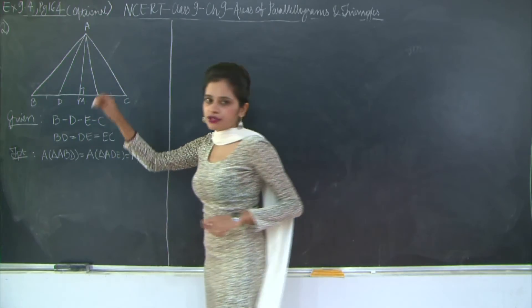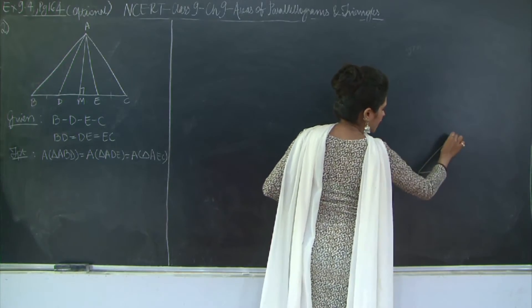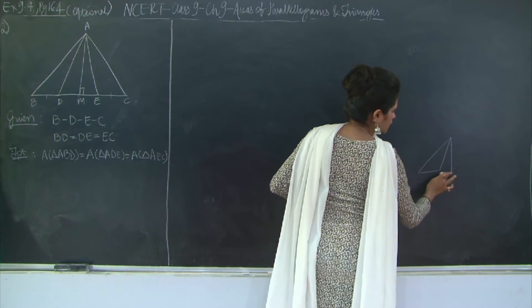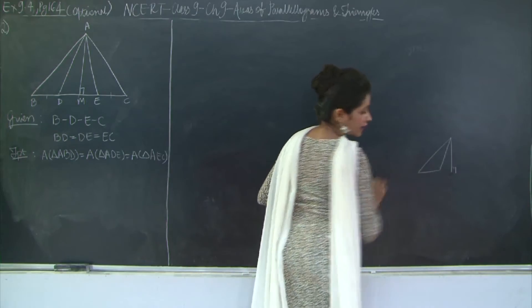Although see this is an obtuse angle triangle. So if you have an obtuse angle triangle the height is always the perpendicular drawn from the opposite vertex to the base. So this is the height of your triangle.